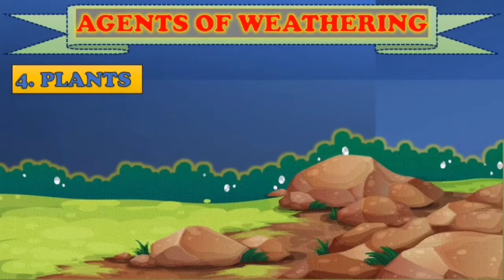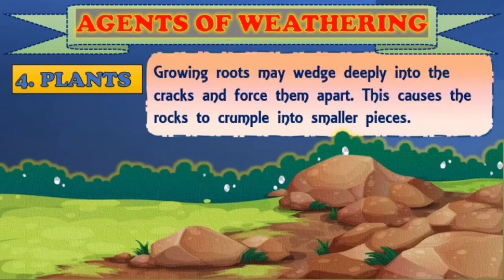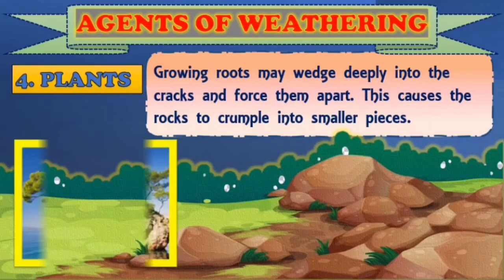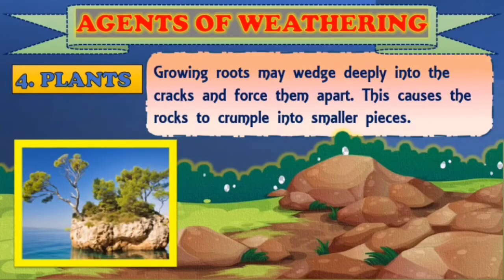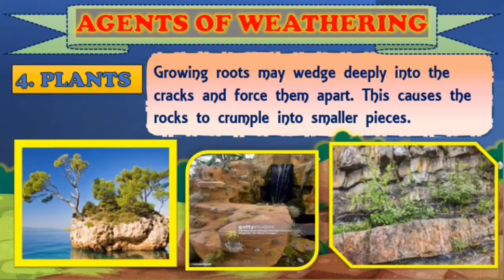Number four agent of weathering is plants. Plants grow everywhere, including on rock surfaces. Plants help break down rocks by forcing their roots into the smaller cracks in the rocks. The growing roots may wedge deeply into the cracks and force them apart, causing the rocks to crumble into smaller pieces.